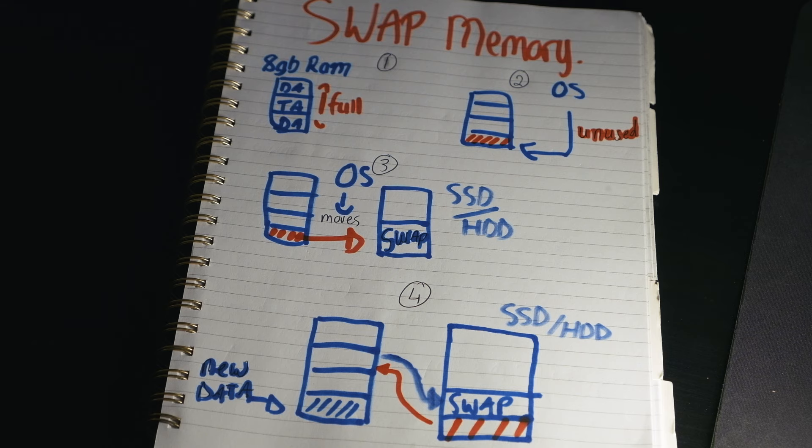Once you take into account the operating system file size and potentially whatever you may use in swap memory, along with whatever files you may store on the computer, the 256GB base storage really starts to disappear quite quickly.